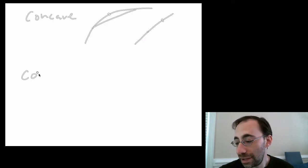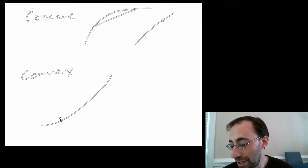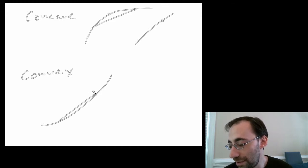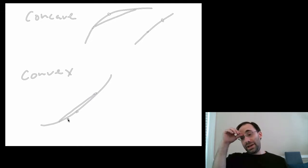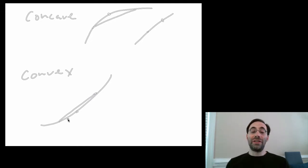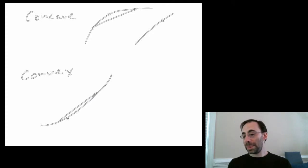A convex function, in contrast — a convex increasing function has a secant above the curve at all points. A strictly convex function has the line above the curve at all points. A weakly convex function can have the line sometimes collinear with the curve itself.